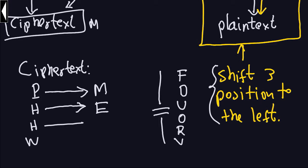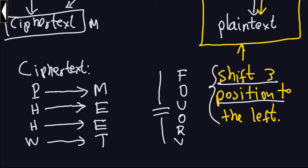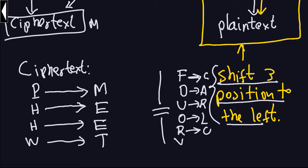Since you know the pattern, I won't go through every letter in detail. If you do it yourself — which I suggest — you'll find that W transforms to T, again shifting three positions to the left. For the remaining letters: F transforms to C, O to A, U to R, O to L, R to O, and V to S.